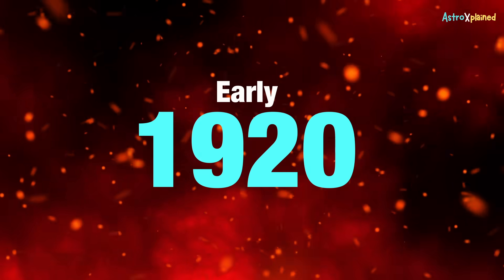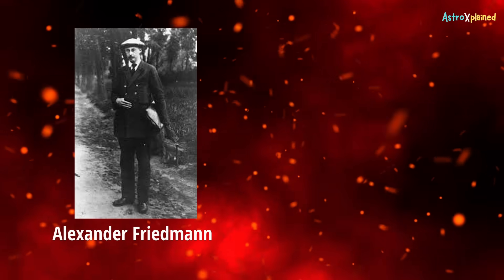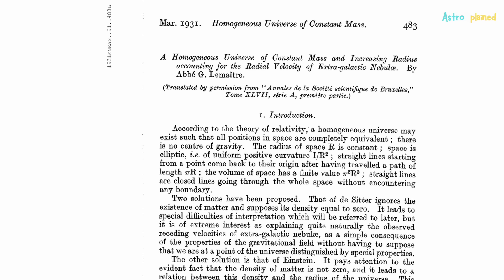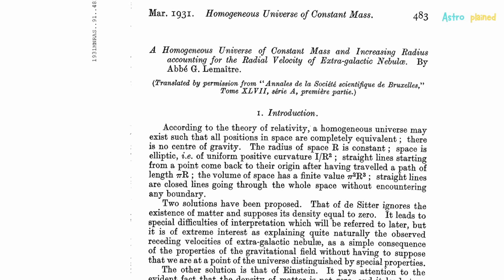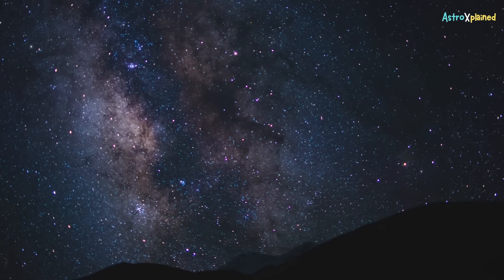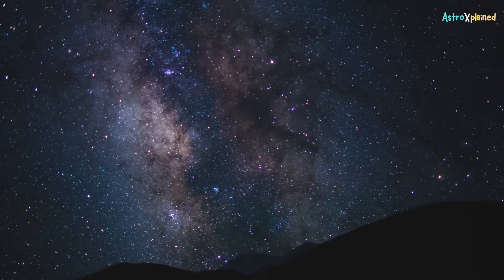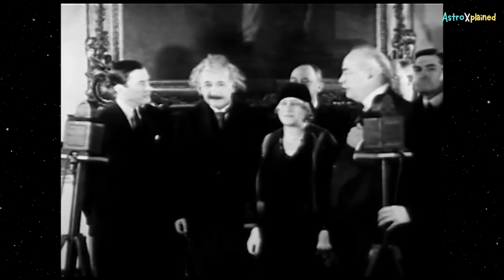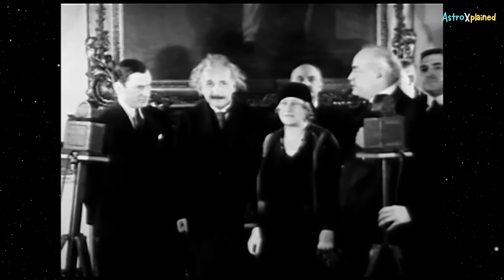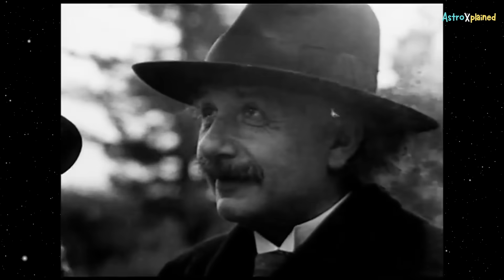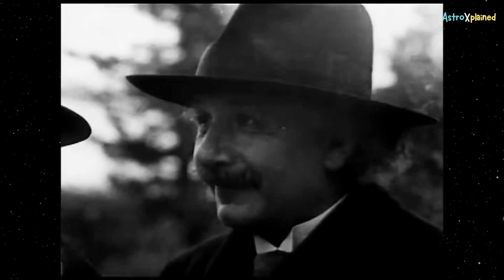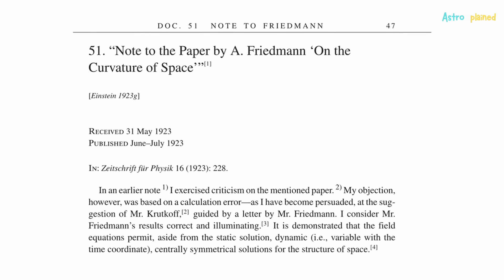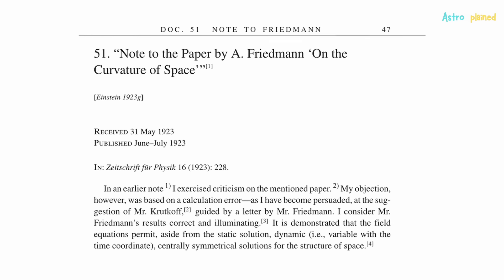In the early 1920s, cosmologists like Friedman and Le Maître independently derived solutions to Einstein's field equations, assuming the universe was homogeneous and isotropic, and arrived at a conclusion that the universe is either expanding or contracting. Einstein initially rejected Friedman's paper, claiming he had made a mathematical error. But by the next year, after being shown that Friedman's mathematics was correct, Einstein published a note in Zeitschrift für Physik in 1923 acknowledging Friedman's work.